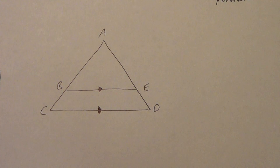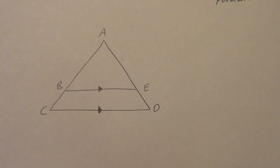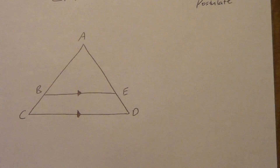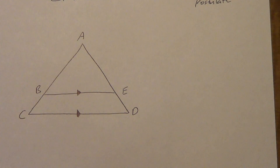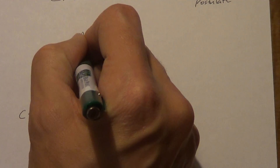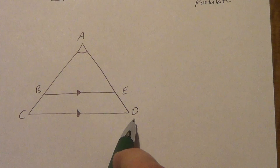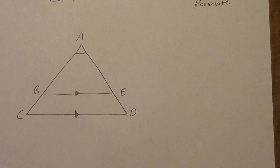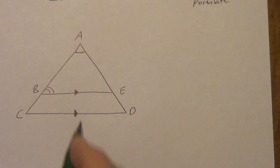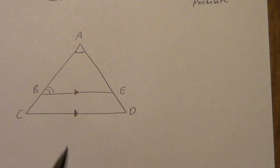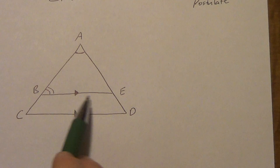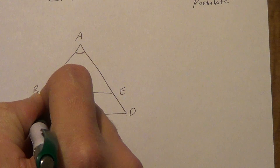This next one we could do a couple different ways. When you get something like this it can get a little confusing, so if you need to draw them out separately as two separate triangles, go ahead. The little shaded triangles mean we have parallel lines. So angle BAE is congruent to angle CAD — it's the same angle, reflexive property of congruence. Then with the parallel lines and this transversal, angle ABE is congruent to angle C.